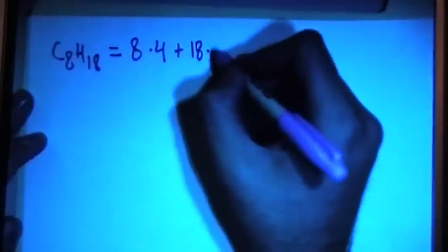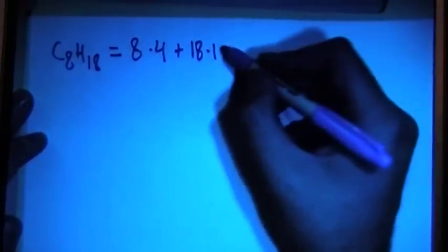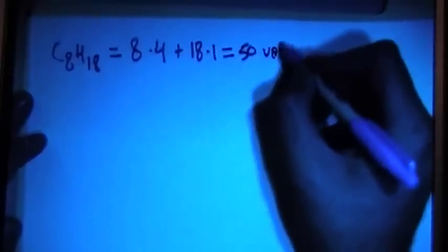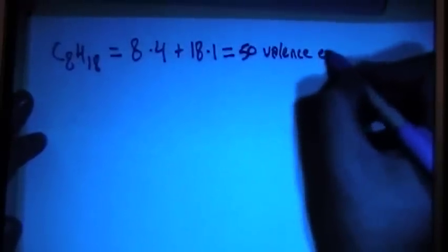C8H18 is the chemical formula for octane, and that's going to give us 8 carbons with 4 valence electrons for each one, plus 18 hydrogens with 1 valence electron for each of those. It's going to give us a total of 50 valence electrons.